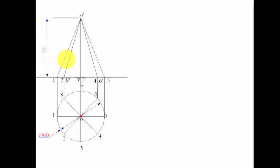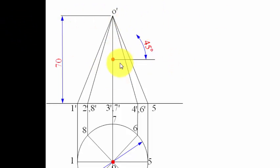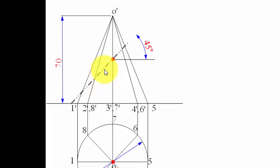The cutting plane bisects the axis, so the bisecting point is 35 mm below the apex and 35 mm above the base. Through this midpoint we draw the cutting plane at 45 degrees to the horizontal, and we can clearly see it bisecting the axis.